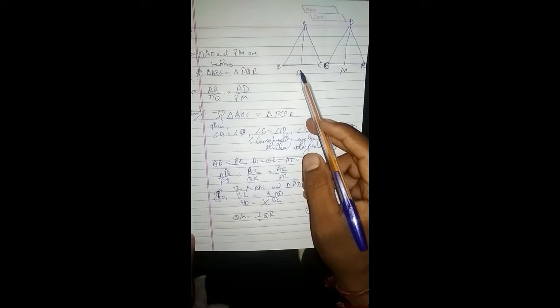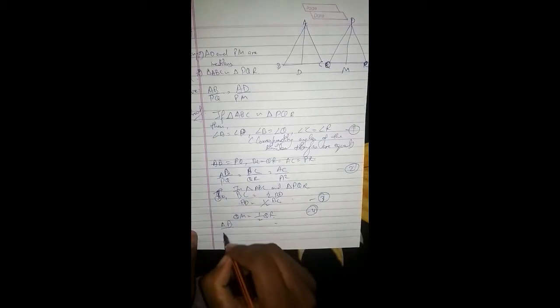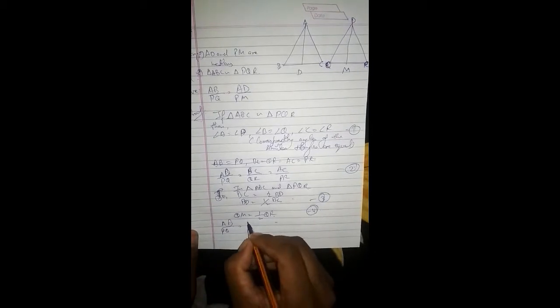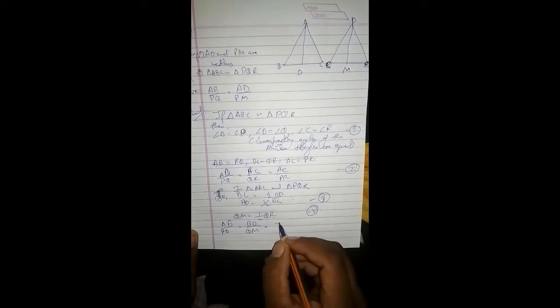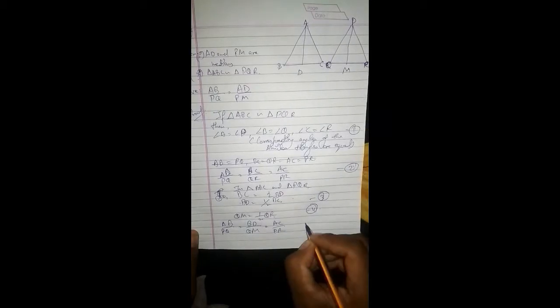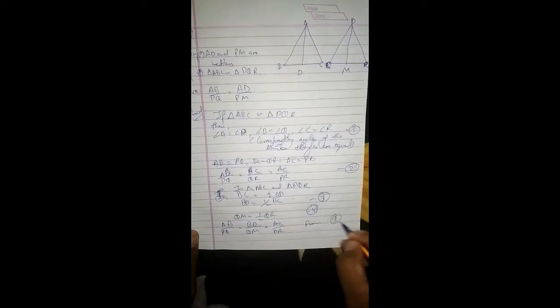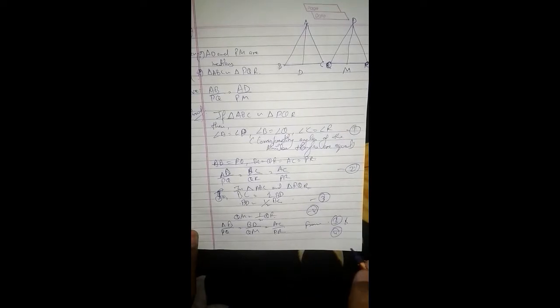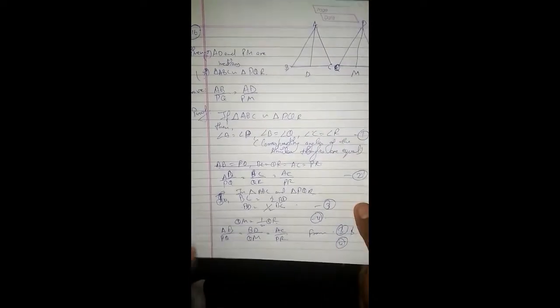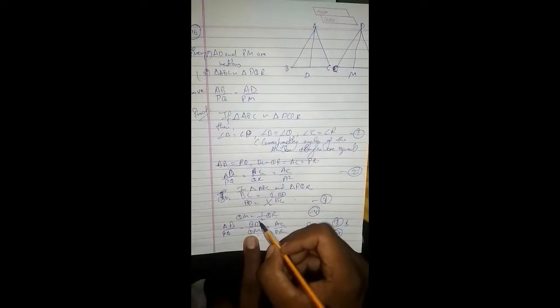BD is equal to AC upon PR from the third and fourth equation. We can write BD upon QM.